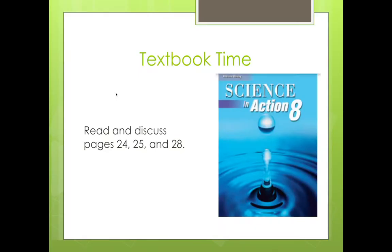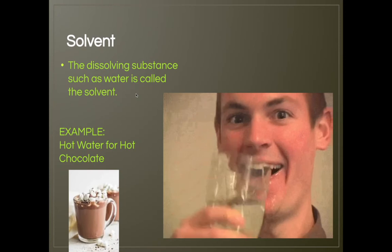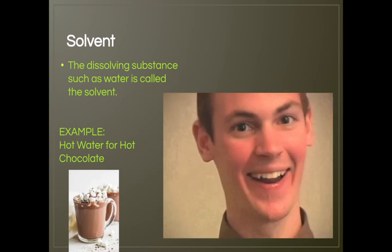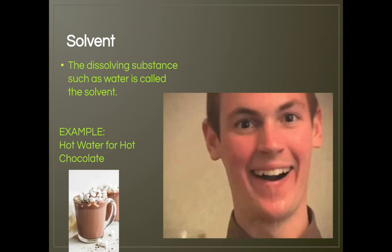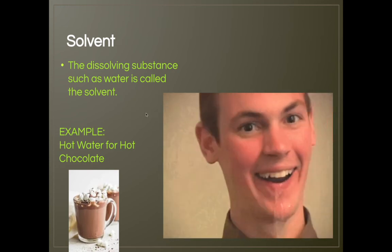You need to be able to define a solute. A solute is the substance that dissolves — for example, juice crystals in water. The solvent is the dissolving substance — for example, the hot water for hot chocolate dissolving the powder.